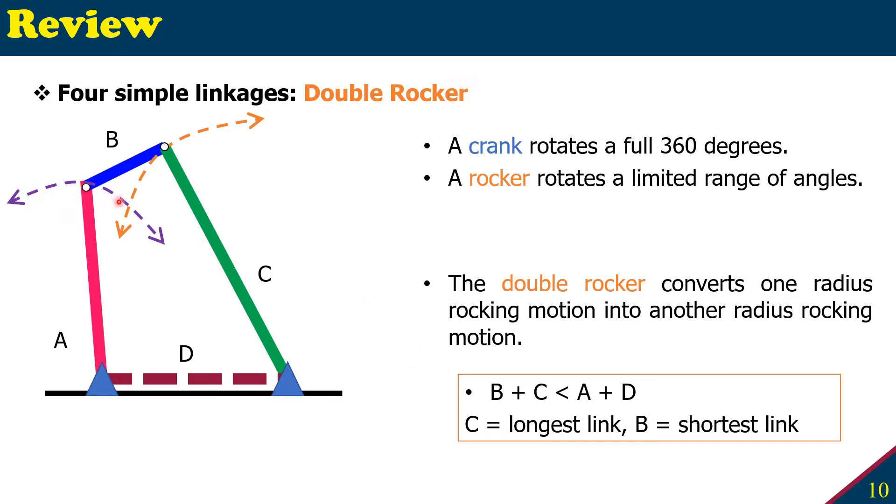And you see here, it can rotate a certain degree, and this one can also rotate a certain degree. And that's why this is a double rocker. Again, if you apply the Grashof's law, then if C is the longest and B is the shortest for double rocker, the coupler is always the shortest.